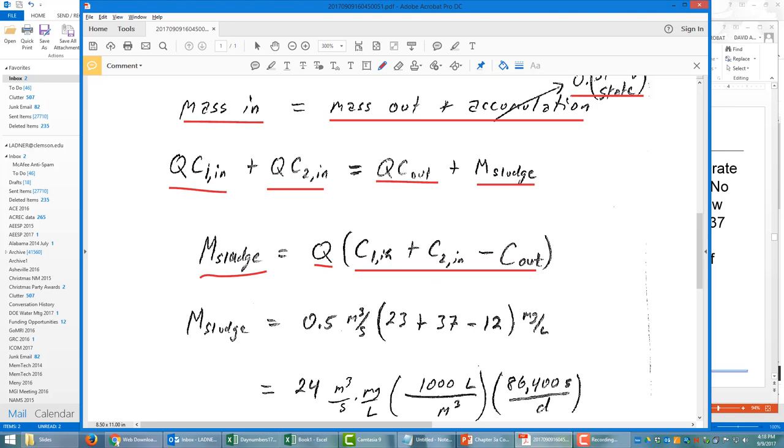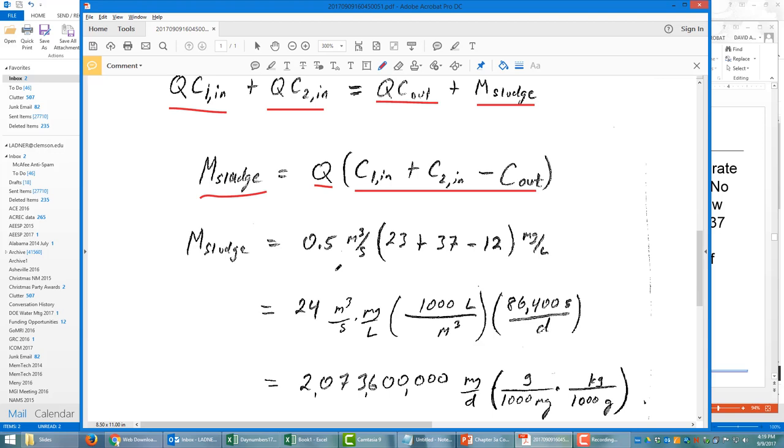Again, Q is common among all the terms, so we can simply have C1 plus C2 minus C out, and now we're ready to plug in numbers. So we have 0.5, 23 plus 37 minus 12, those are milligrams per liter, and the 0.5 was a flow rate in meters cubed per second.